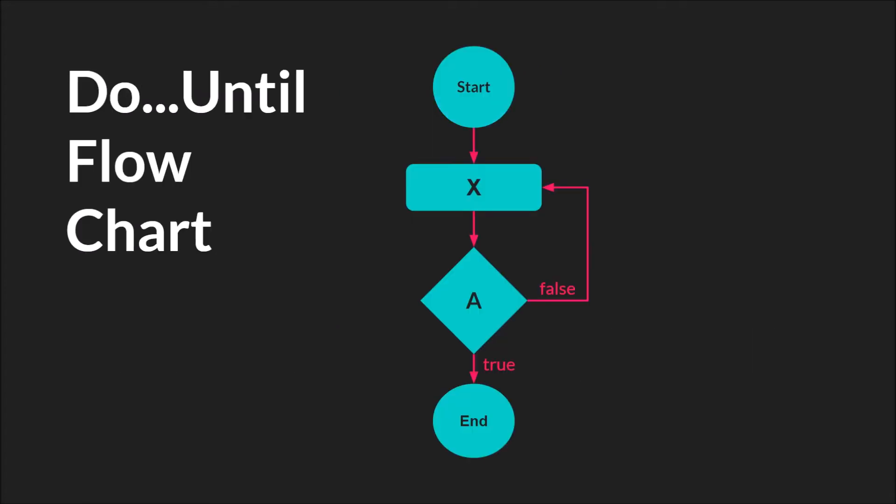So the flowchart for a do until loop looks like this. The code is going along, it runs the code here first, then it checks the condition. If that condition is false, it will repeat and do this code again. Condition is false, loop, loop, loop, until this condition is true. Once the condition is true, then the code will continue.